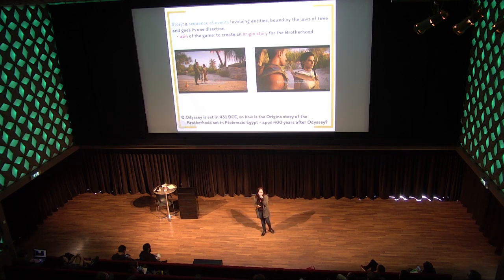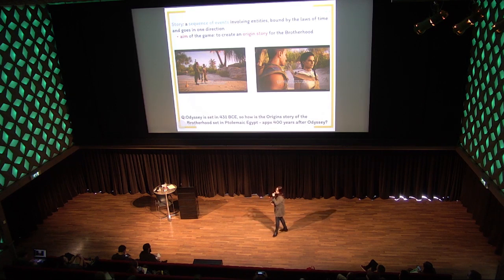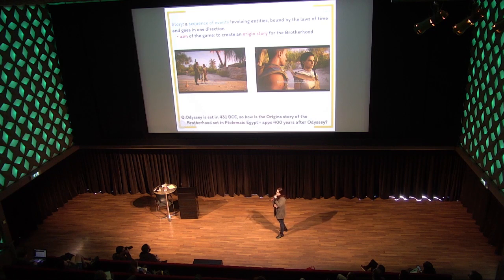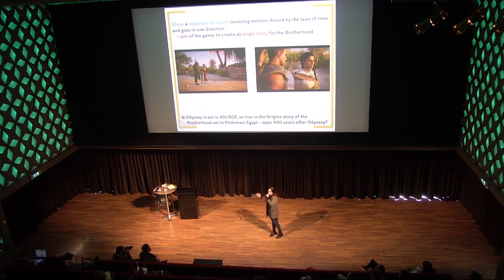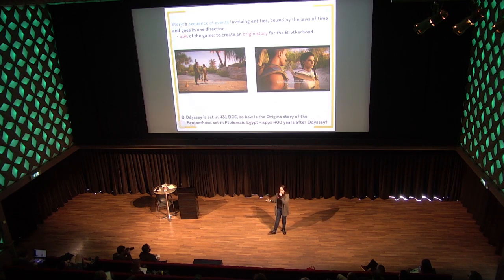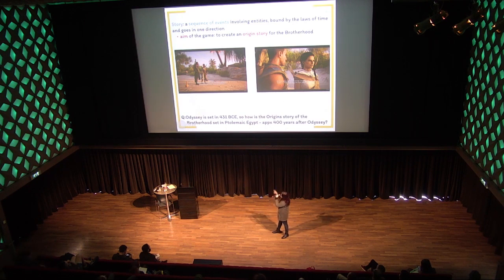There are three elements of literature, and I'll go quickly through them because I want to focus on the last one. The first one is story, defined as a sequence of events involving entities — or in this particular case, characters — bounded by the loss of time, going in one direction. The aim of Origins was to create an in-beginning story for the entire franchise, and we see it in these two images.